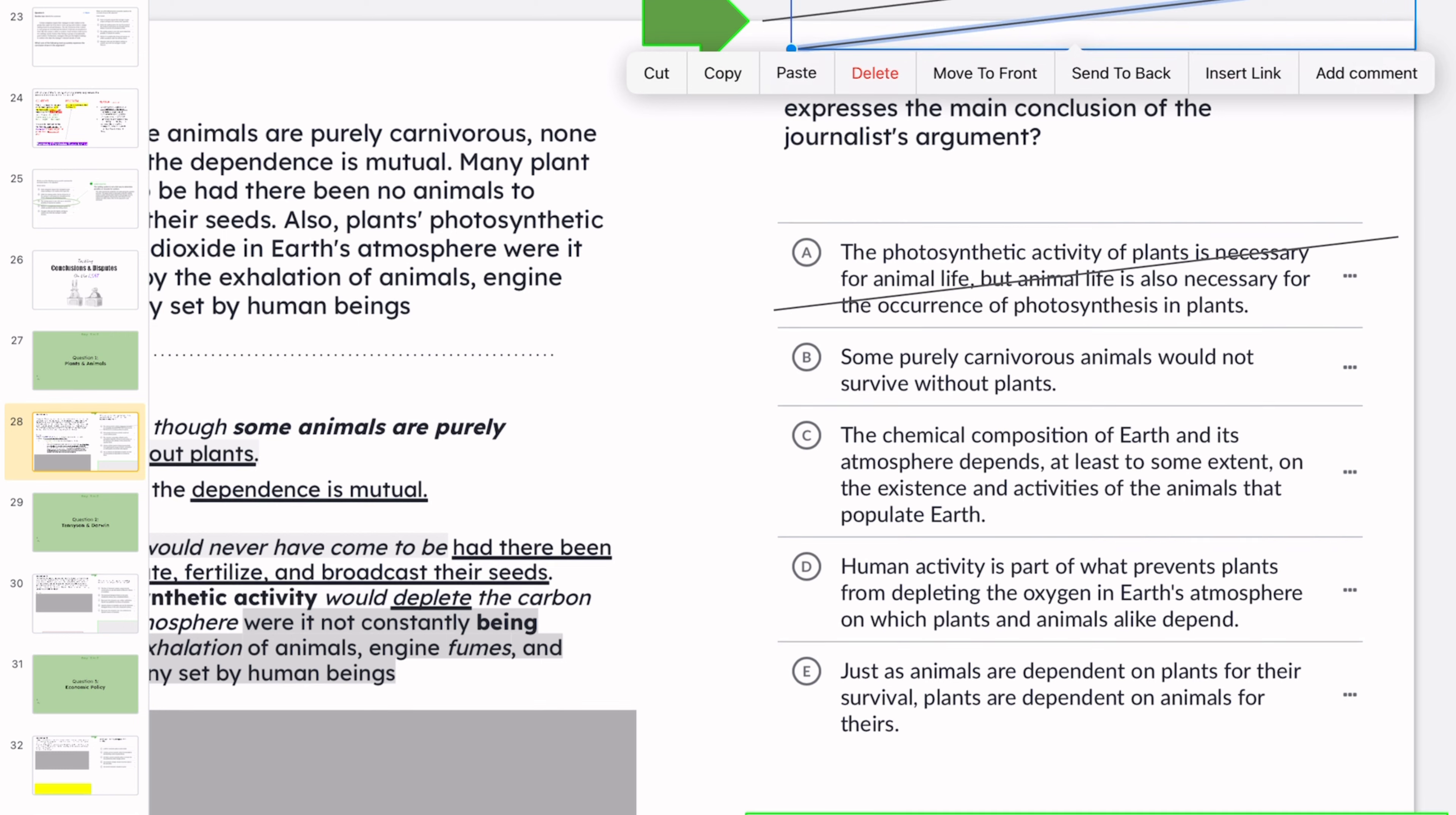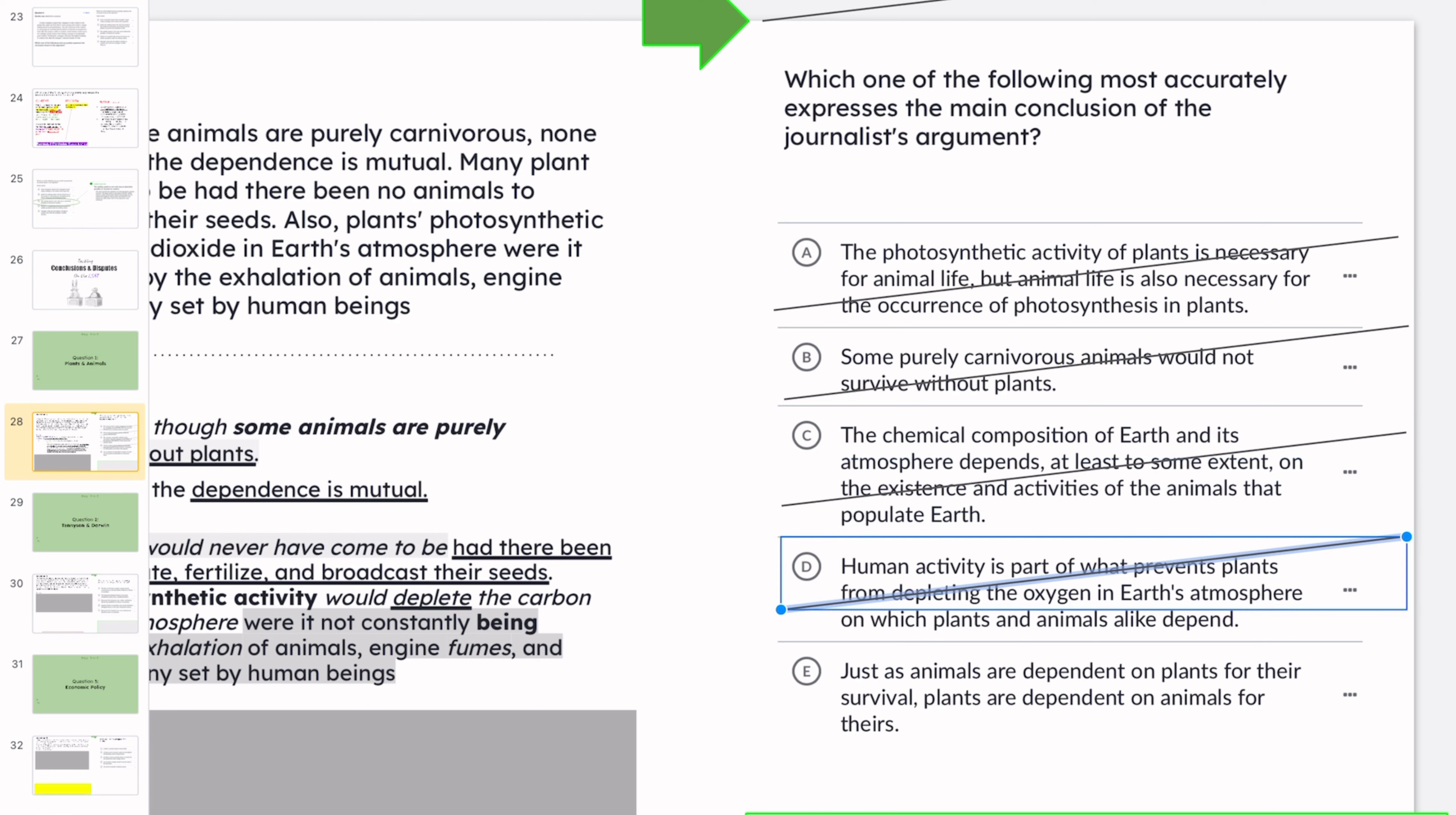All right, so we can cross that one out. The chemical composition of Earth and its atmosphere depends at least to some extent on the existence and activities of the animals that populate the Earth. We know that's not it. We're looking for the dependence is mutual. D, human activity is part of what prevents plants from depleting the oxygen in Earth's atmosphere on which plants and animals alike depend. No. Just E, just as animals are dependent on plants for their survival, plants are dependent on animals for theirs. Ding, ding, ding. Dependence is mutual.